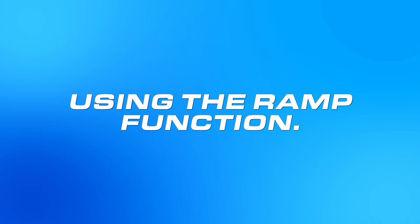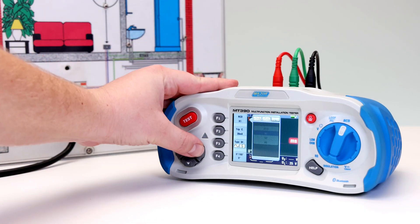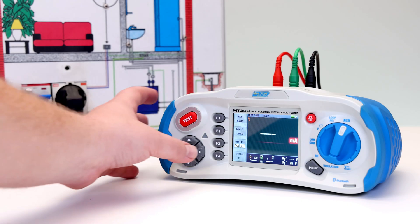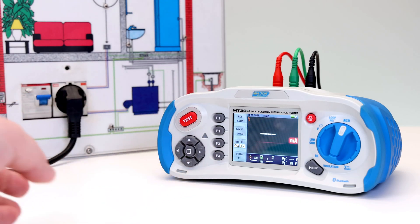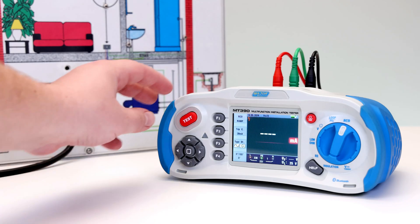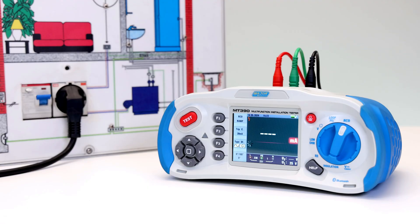Using the ramp function, use the F1 button and arrow keys to select the ramp function. Using the F2 and F3 buttons, select the RCD's trip current and the type of RCD. Press F4 for selective zero degree and 180 degree. Press the test button when ready. The test current will ramp up from three milliamps to 33 milliamps in three milliamp stages. Your RCD should operate at approximately 21 milliamps for it to be in compliance.